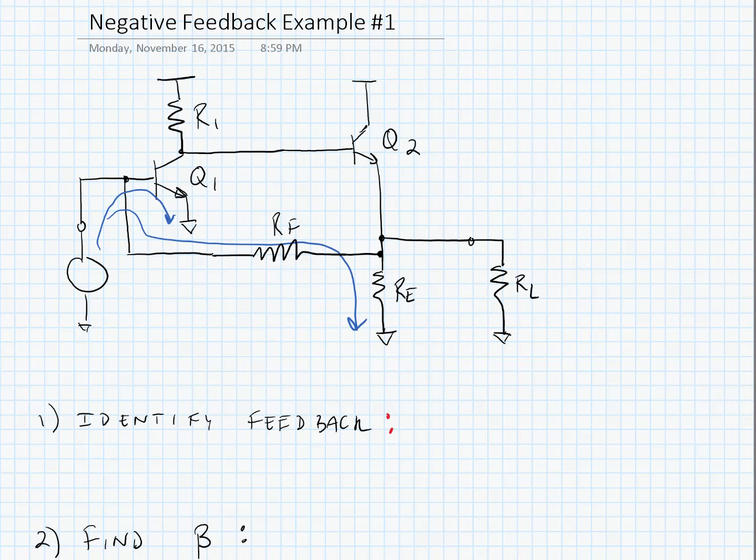We have a shunt connection at the input. With respect to the output, we can go either through our feedback path or through our amplifier, and that would also complete the circuit. So we have a shunt connection at the output. This is shunt-shunt feedback, which is used for trans-resistance amplifiers.